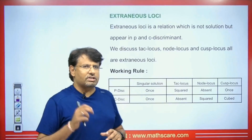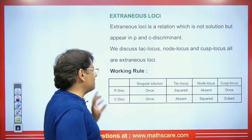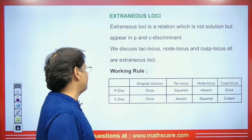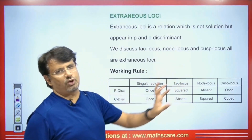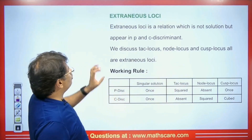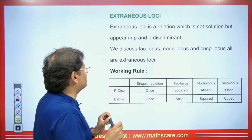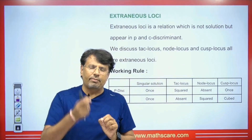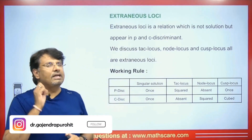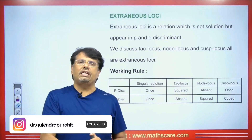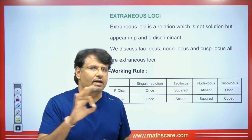Let's discuss what exactly is an extraneous loci and how we determine, using the P discriminant and the C discriminant, whether it is a singular solution, a tack locus, a node locus, or a cusp locus. The extraneous loci represents the particular relation between the P discriminant and C discriminant. However, this is not at all the solution of the differential equation — it is not the solution to a first order higher degree differential equation.